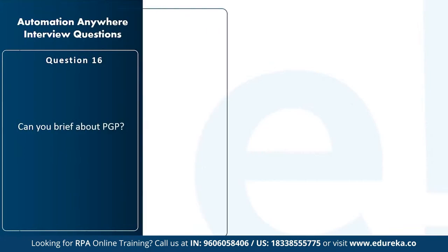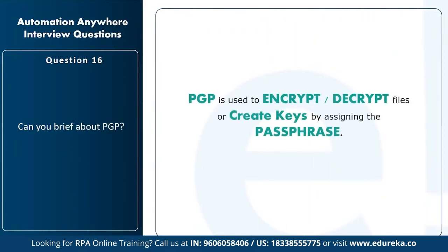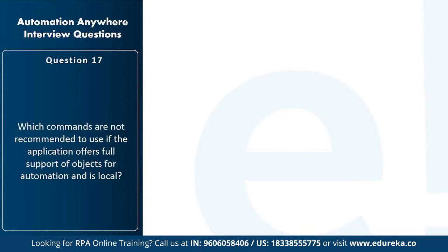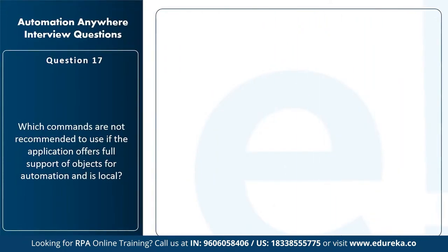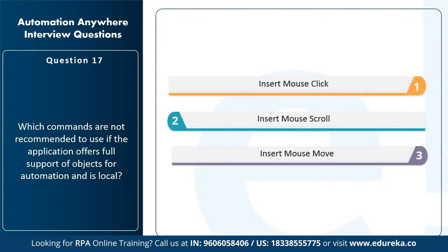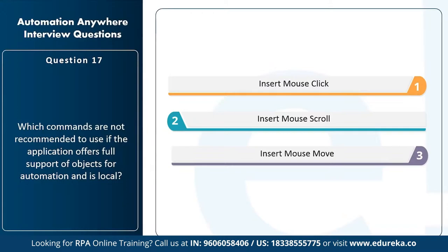Next question: can you brief about PGP? PGP is a command in Automation Anywhere used to encrypt or decrypt files, or create keys by assigning a passphrase. Next question: which commands are not recommended if the application offers full object support and is local? The Insert Mouse Click, Insert Mouse Scroll, and Insert Mouse Move commands are not recommended, because objects can change and these mouse-action commands may fail.